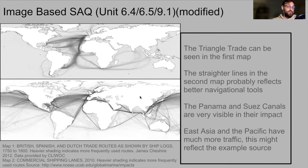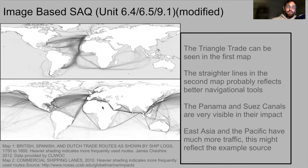Notice that the second map has a lot of straight lines, which is likely because of better navigational tools — better tools mean more consistent shipping lanes and routes. Also notice the Panama Canal running between North and South America and the Suez Canal running between Africa and the Middle East are very clearly visible. Look how heavy the lines are going from Europe through the Mediterranean and out into India. There are still ships going around the coast of Africa, but not nearly as many as those going through the Suez Canal. In the top map, very little trade is going on in East Asia — Japan, Korea — which you could attribute to the fact that both the Chinese and Japanese governments at the time had strictly limited trade on an official level.